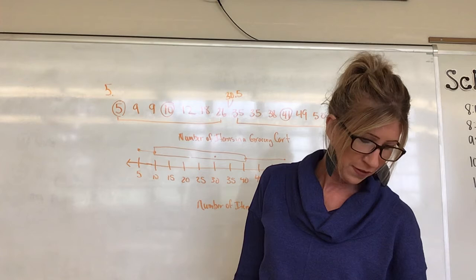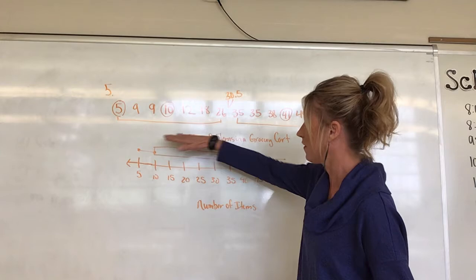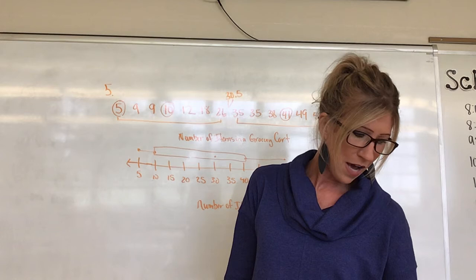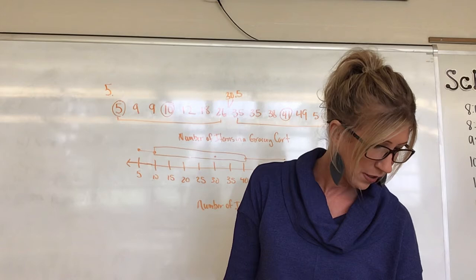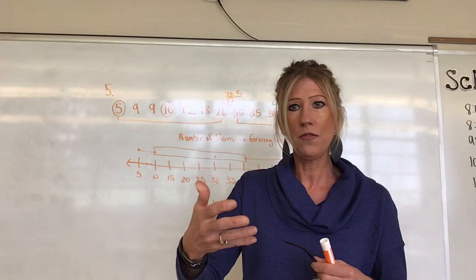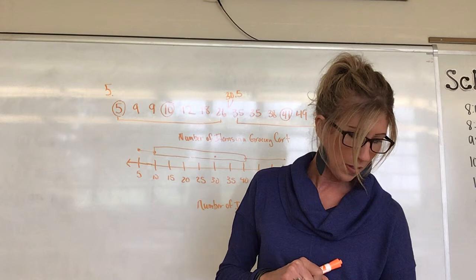Part A says: construct a box and whisker plot to represent the heights of the boys, and then on the same number line construct a box and whisker plot for the girls too. So you'll have both plots right above each other on one number line — you can compare them side by side. Part B asks: how do the two data sets compare? Just observe and comment on where the medians and quartiles fall for boys versus girls.